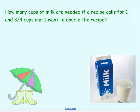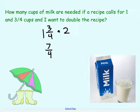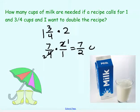Similarly, if a recipe calls for 1 and 3 fourths cups of milk and I want to double it, I multiply by 2. I put it into improper fractions: 7 over 4 times 2 over 1. I can simplify and get 7 over 2 cups of milk — so 3 and a half cups of milk.